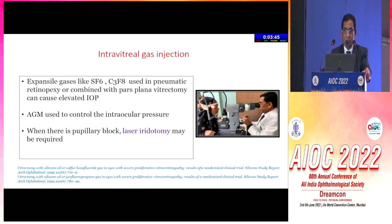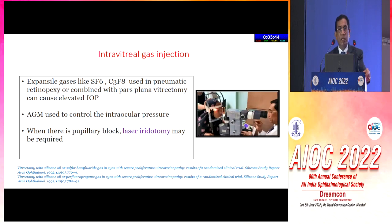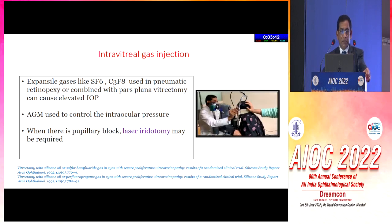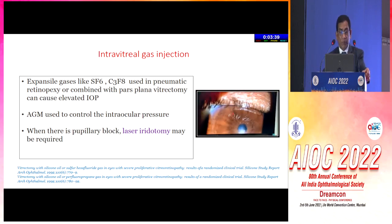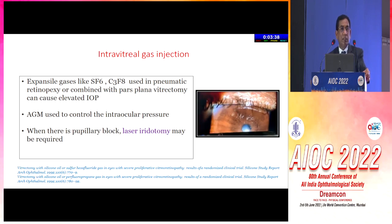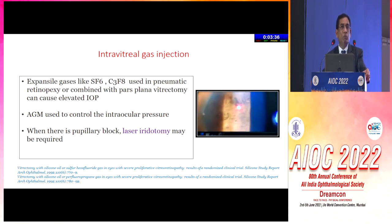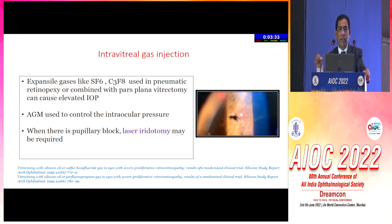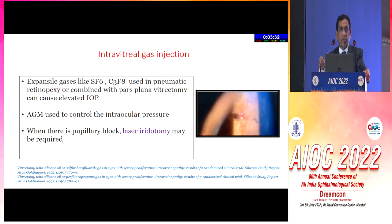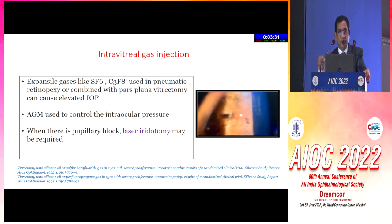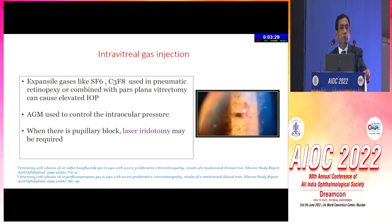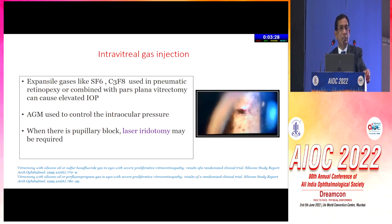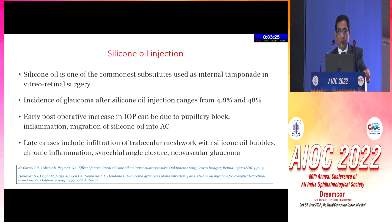Intravitreal gas injection sometimes causes higher intraocular pressure. Anti-glaucoma medication usually controls the pressure. Laser iridotomy actually works better because the gas is deposited behind the iris inferiorly. So if you do a laser inferiorly, it works and helps in decreasing intraocular pressure.